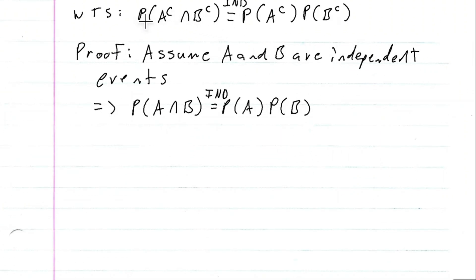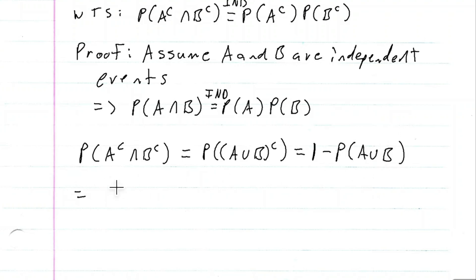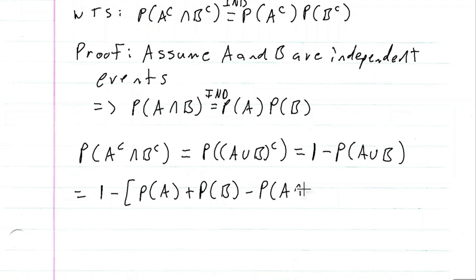I want to show that the probability of A complement intersection B complement is equal to the probability of A complement times the probability of B complement. So I'll start with the probability of A complement intersection B complement. By De Morgan's law, I can rewrite this as the probability of A union B complement, which is the same as one minus the probability of A union B. Then I can rewrite A union B as the probability of A plus the probability of B minus the probability of A intersection B.